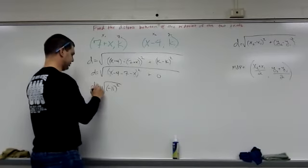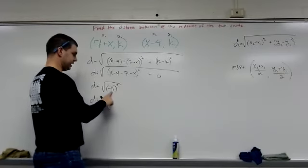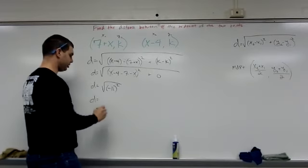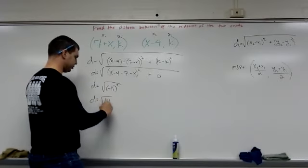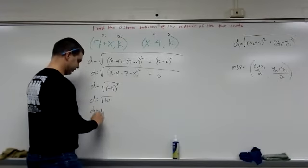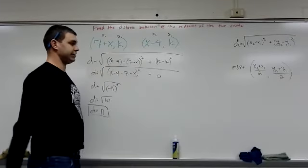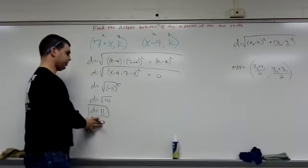This is all distance, so our distance is going to be negative 11 squared. Negative 11 times negative 11 is 121, and then the square root of 121 gives me a distance of 11. So the distance between these two points, whatever our x and k is, is actually just 11.